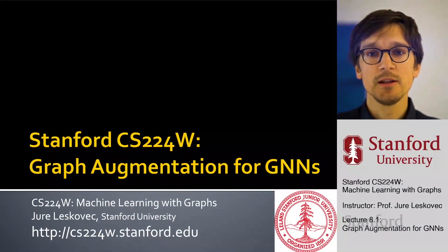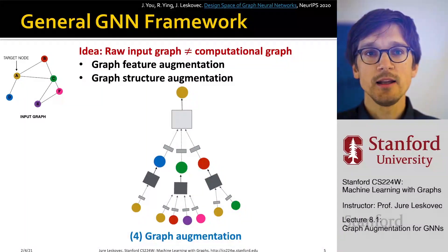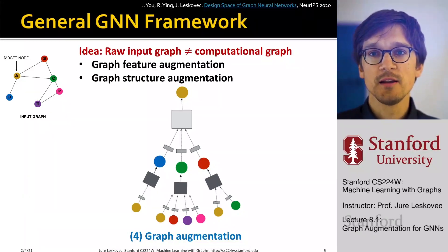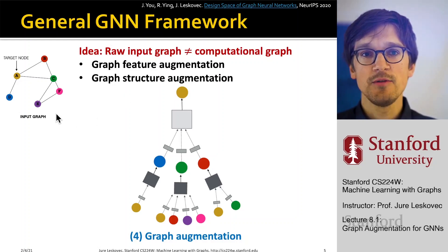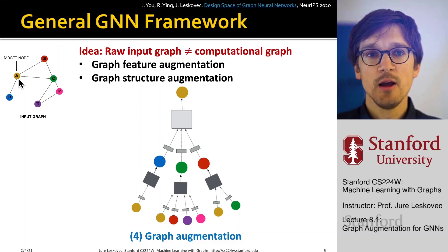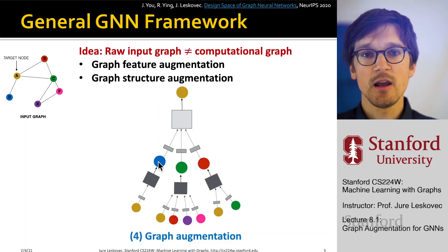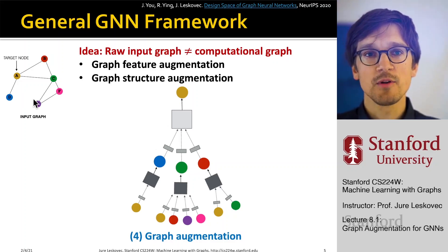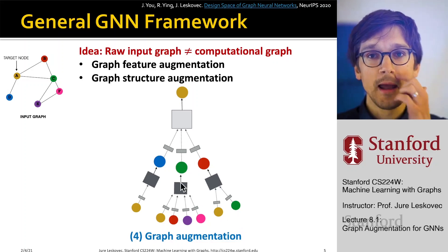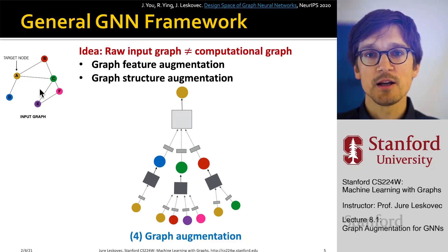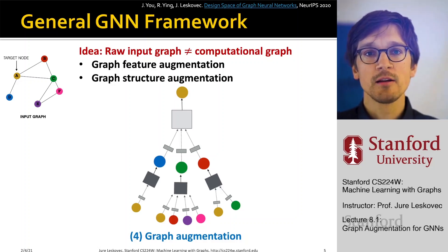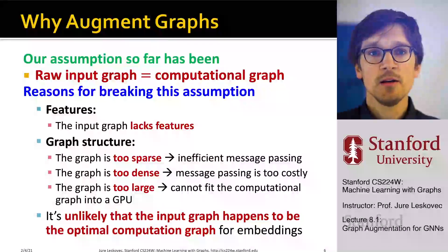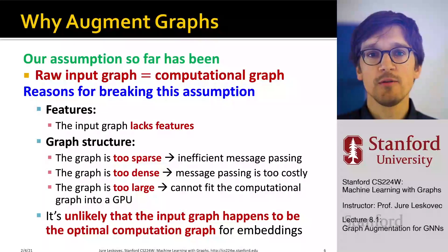Let's talk about graph augmentation for graph neural networks. The idea is that the raw input graph does not necessarily need to present the underlying computation graph. What I discussed so far was that if I want to create a graph neural network for a given target node, I take information from its neighbors, and each neighbor takes information from its own neighbors. However, this translation from input graph structure to GNN structure does not need to be one-to-one. I don't need to take the raw input graph and interpret it as the computational graph.